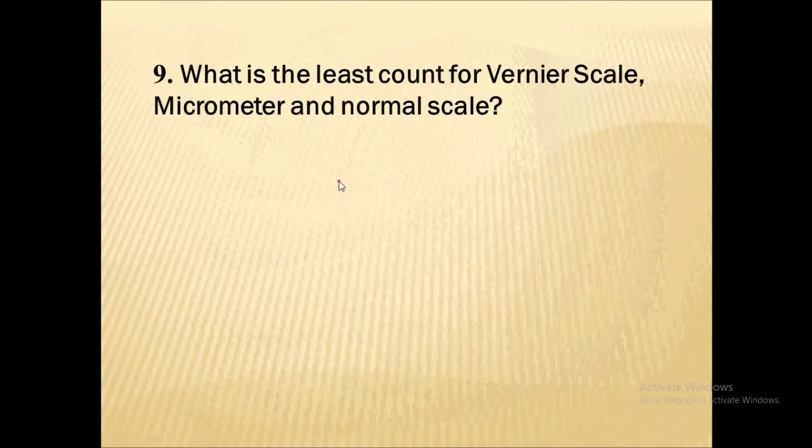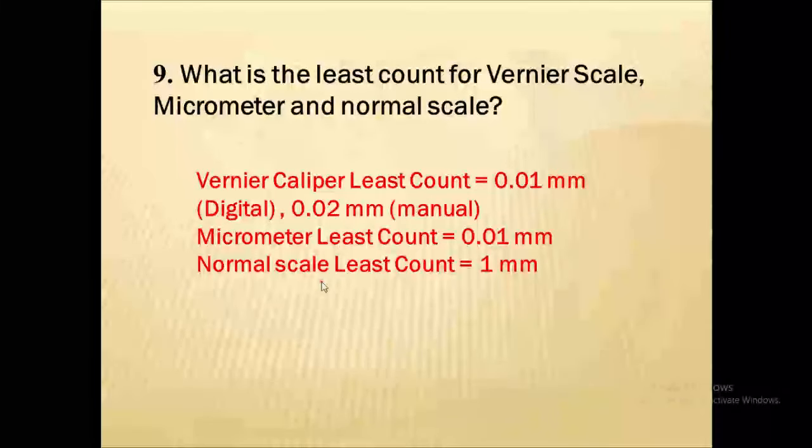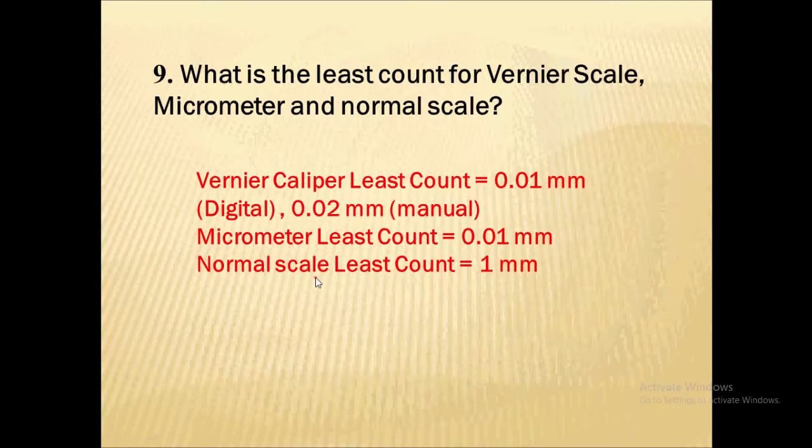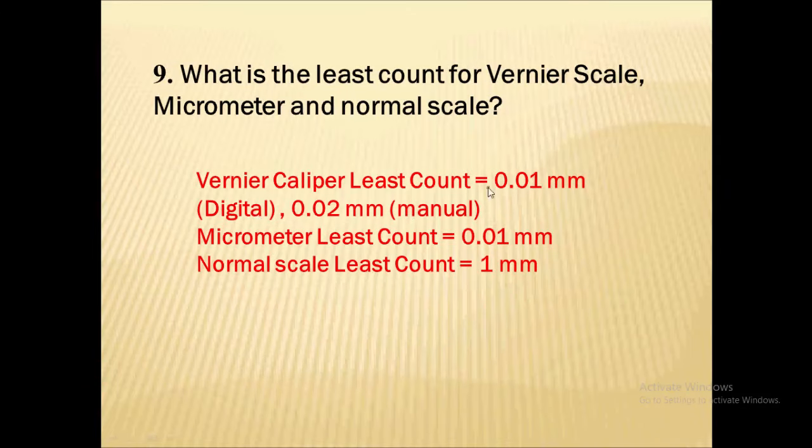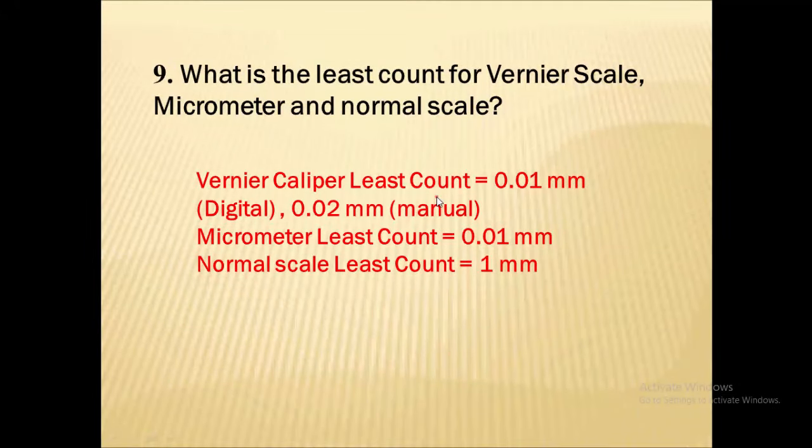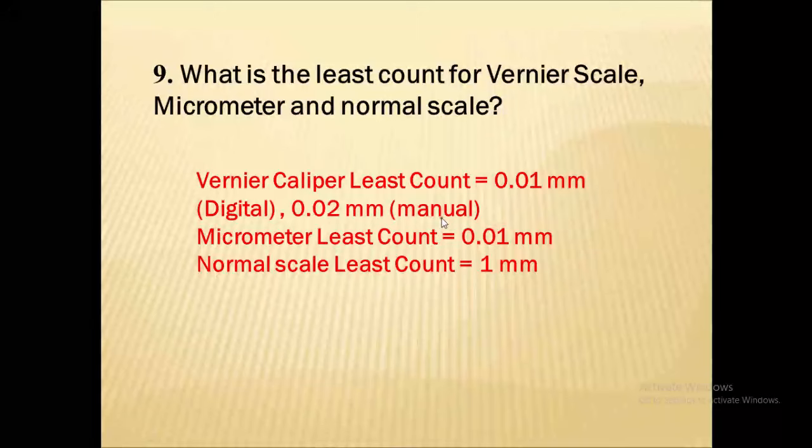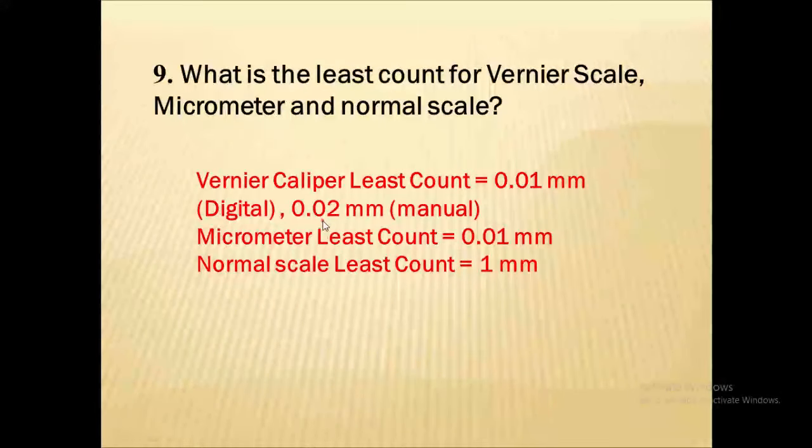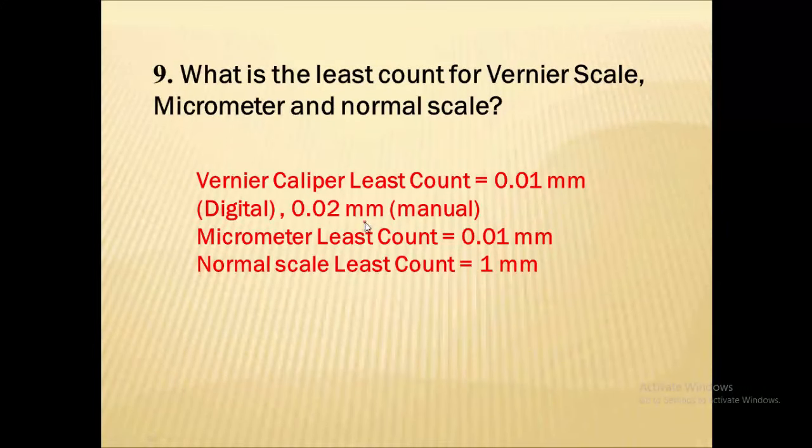What is the least count for Vernier scale, micrometer and a normal scale? For Vernier caliper, if it is digital, the least count - meaning minimum possible distance an instrument can measure - will be 0.01 mm. For manual Vernier caliper, the least count is 0.02 mm.